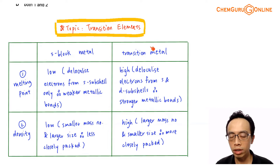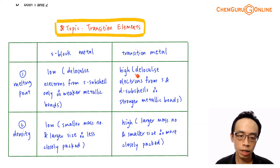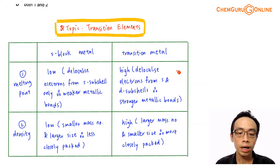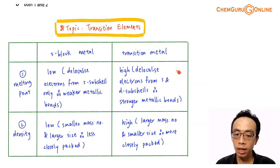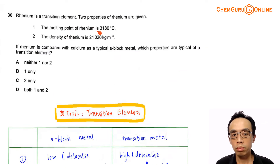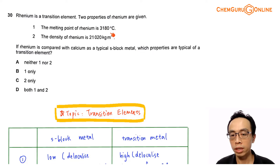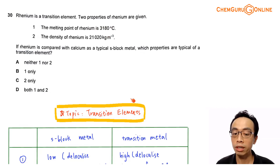Transition metal will have a higher melting point because, in addition to delocalizing S-electrons, it can also delocalize electrons from the D-subshell. This produces a more positively charged cation and a bigger sea of delocalized electrons. The metallic bond for transition metal tends to be stronger, and the melting point will be higher. Looking back at rhenium, the melting point is 3000+ degrees Celsius — a very high melting point. So the first property is typical of a transition element.